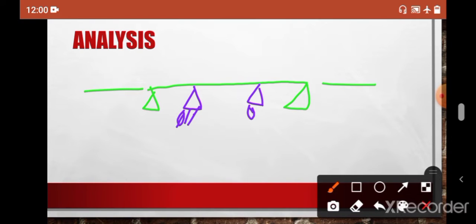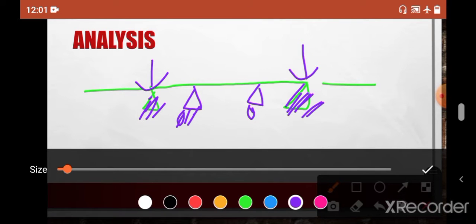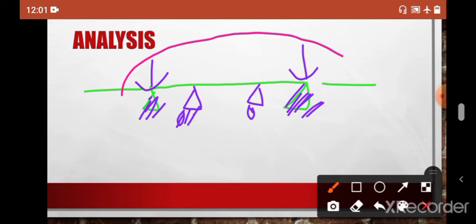So we know what is the reaction here, so remove this support. And also we know the reaction here, remove this support. So again, this one became a simply supported overhang beam so now you can analyze this one also. Clear.